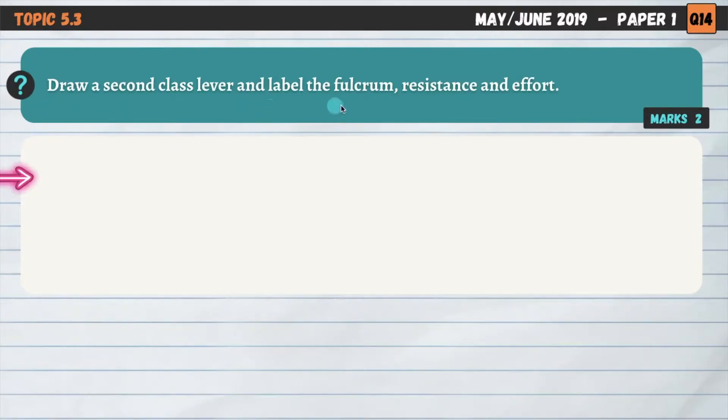Draw a second class lever and label the fulcrum, resistance and effort. The key thing when drawing levers, and this is a very common question that you're likely to get in your exam, is determining which of these three components of a lever—the fulcrum, resistance and effort—sits in the middle. And in this case, for a second class lever, resistance is the middle component there.